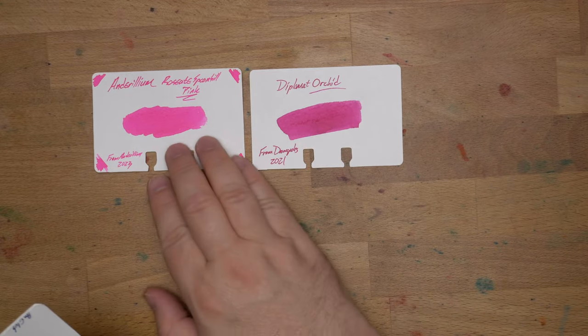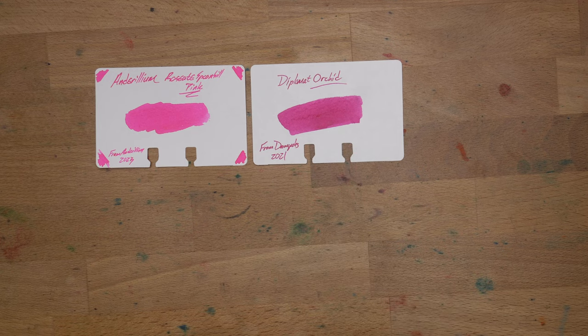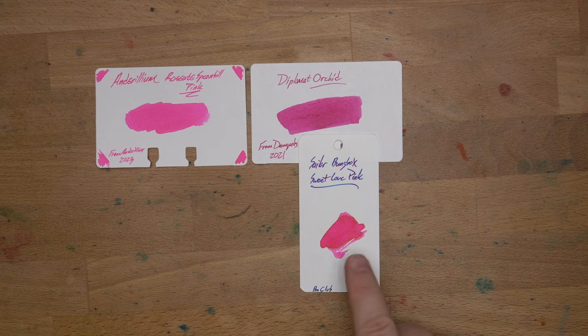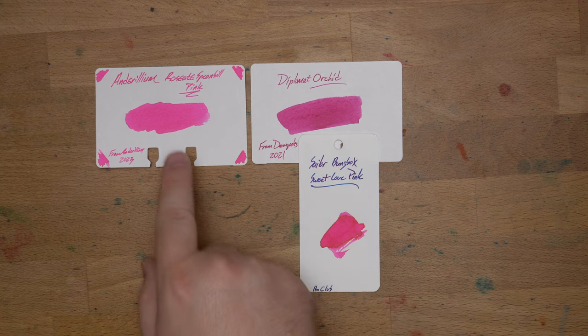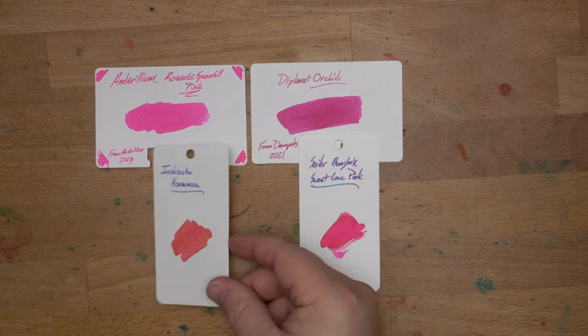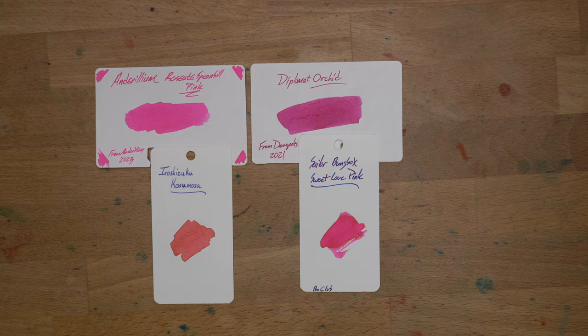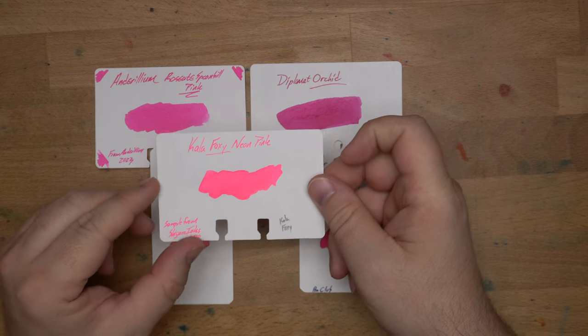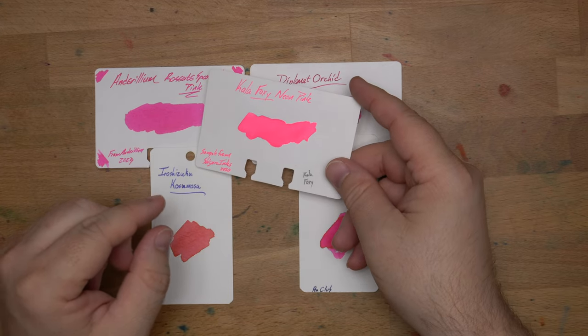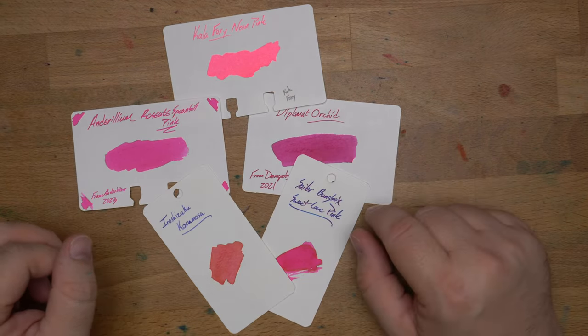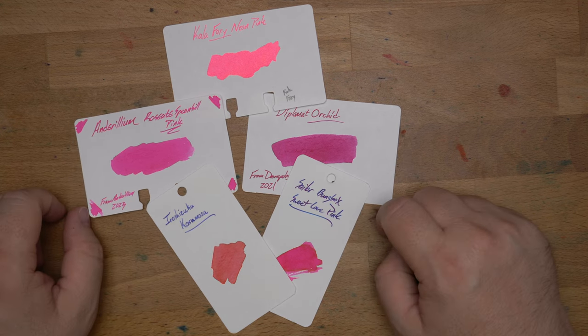Here's Diamine Orchid, which is a pretty nice, but definitely darker shade of pink. Then we've got Sailor Bungubox Sweet Love Pink, which is kind of the same down here where it goes down lighter. You can see some of these same colors here, but it's not really that close. It's in the same family. And then Iroshizuku's Kosumosu, which is definitely more pastel, more carnelian, I think, than this one. And lastly, I went ahead and grabbed Colorverse Foxy, which is a neon pink, which is not close at all. So, look, pink is a big color family and it has a lot of members, but this one kind of stands on its own. I don't have anything just like this one,